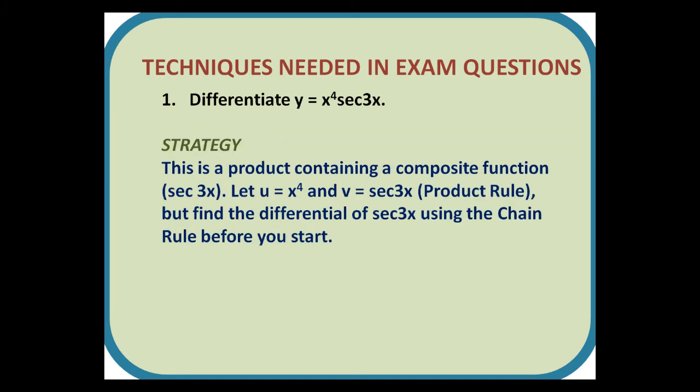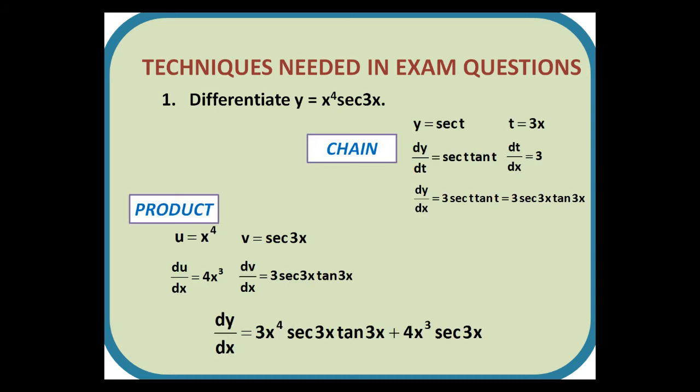Number 1. Differentiate y equals x to the 4, sec 3x. Strategy: This is a product containing composite function, sec 3x. Let u equal x to the 4 and v equal sec 3x, and then apply the product rule. But find the differential of sec 3x using the chain rule before you start. Using the chain rule, we find that the differential of sec 3x is 3 sec 3x tan 3x. We can then incorporate this into our product rule as shown.